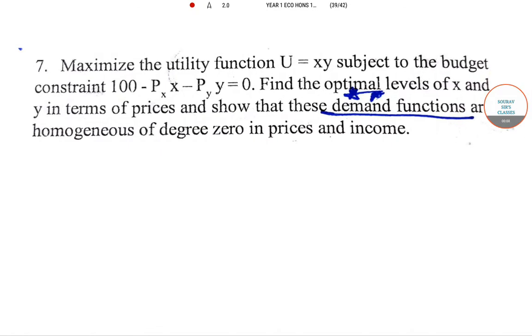They have given a direct utility function of X and Y. Remember that it's a rectangular hyperbola, and the budget constraint they have given directly. But they note that this is not a numerical question; there is an alphabetical structure. So obviously the answer will be in terms of X and Y. So we go for the Lagrangian format.